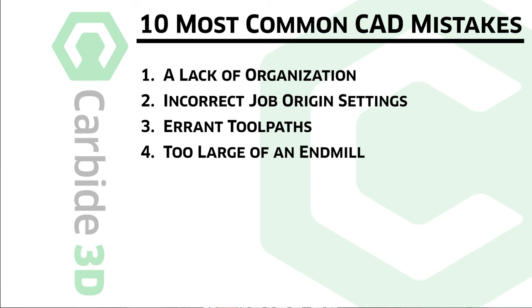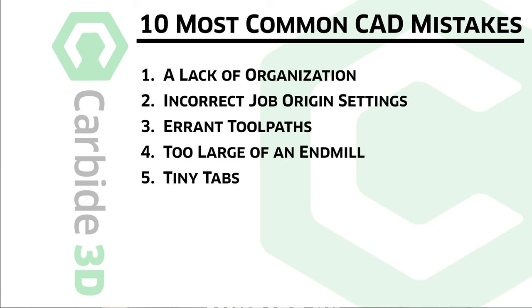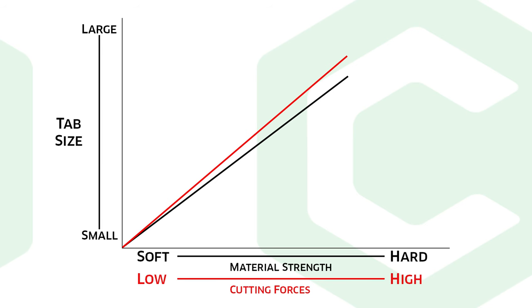You have to decide if that's the look you were wanting. Number five: tiny tabs — things that are not going to hold your project stable as you cut it out or as you add features after you've already done the contour cut. You have to think about the type of material, the size of your cutter, and look at the cutting forces involved. All of those things will factor into whether your tabs are sized appropriately for the job at hand.